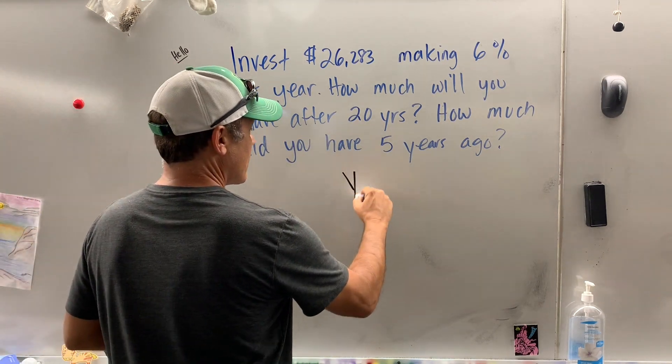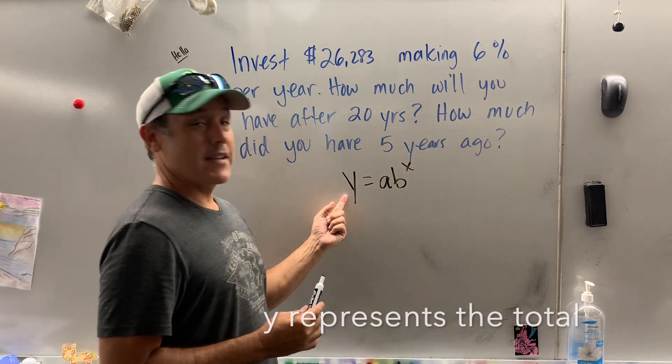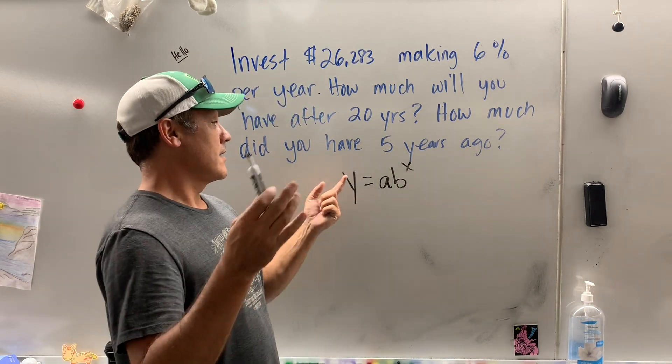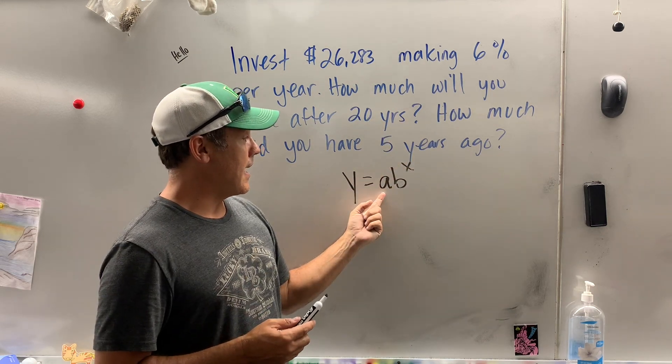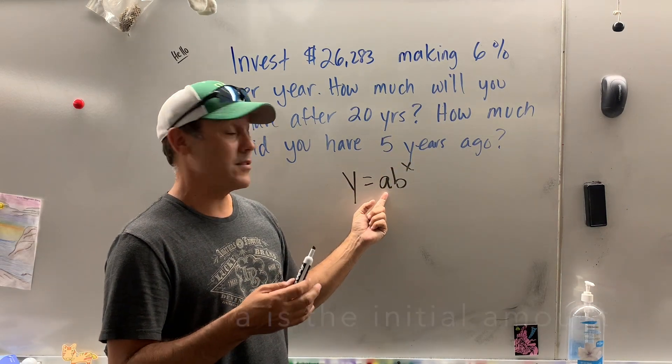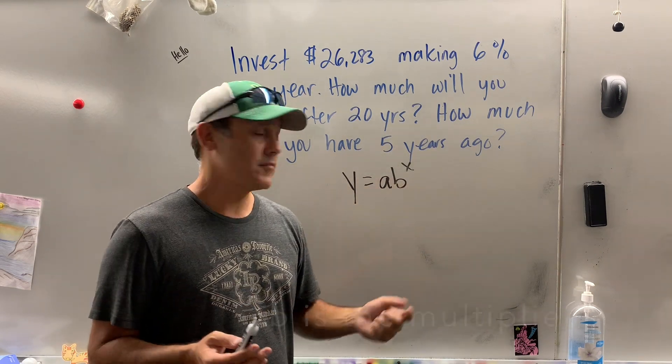Okay, well, you start with Y equals AB to the X. Y is how much money you have at the end, X is the time or number of years in this case, A is the initial investment or the initial amount of something, and B is what's called the multiplier.